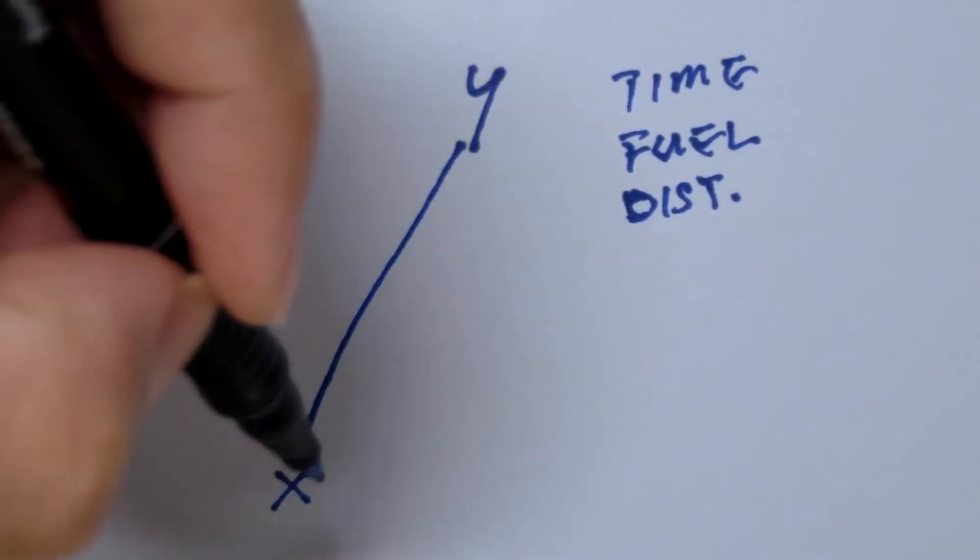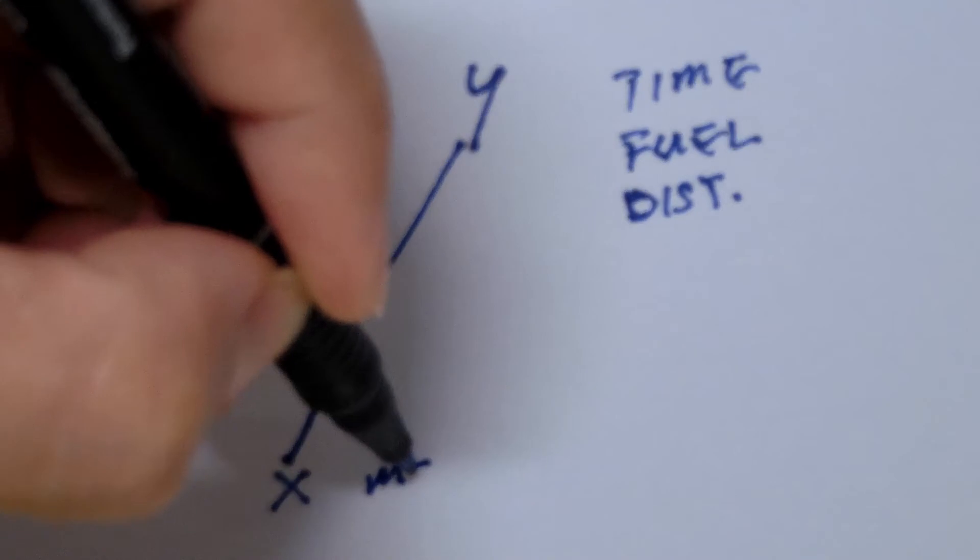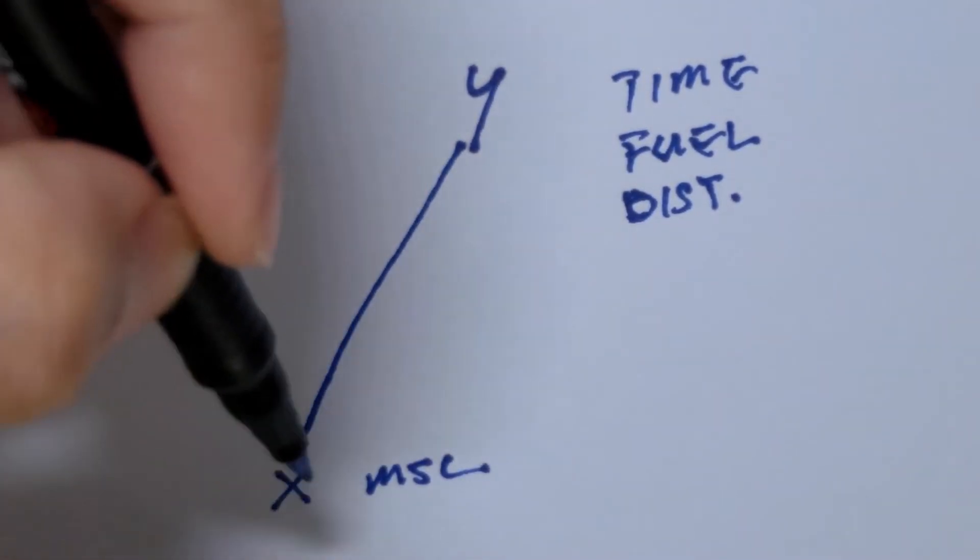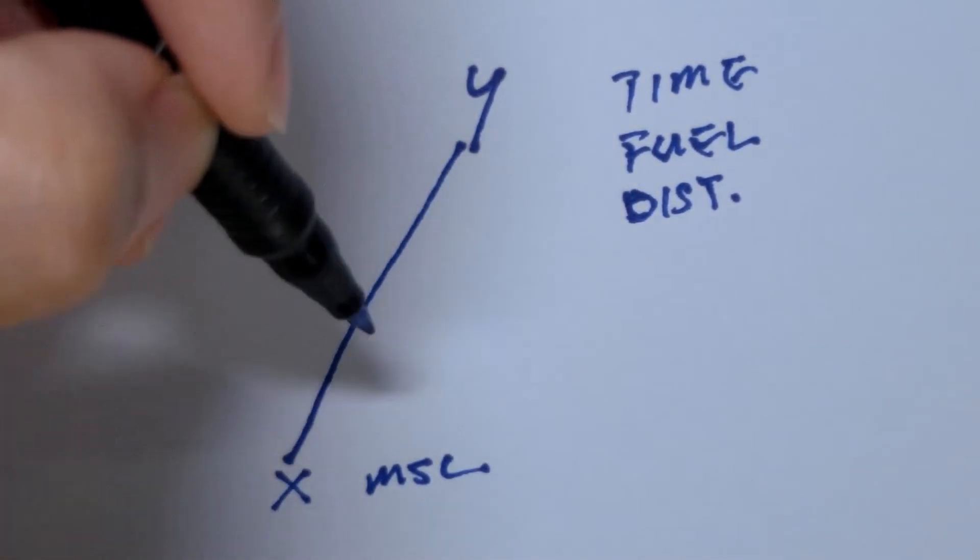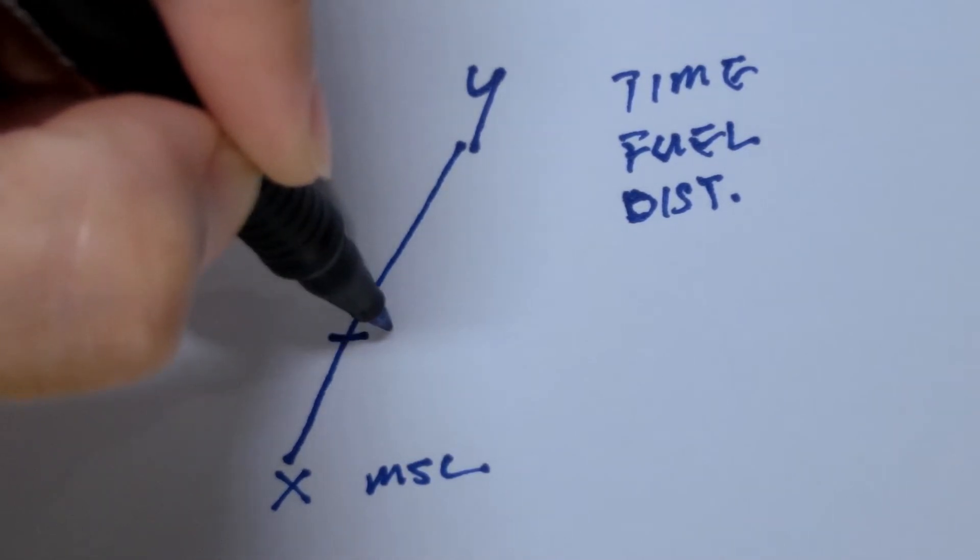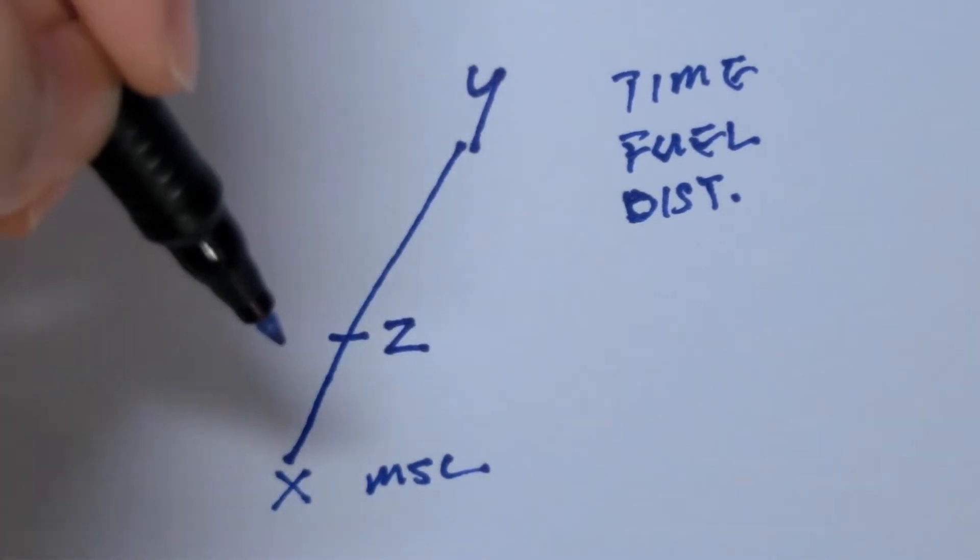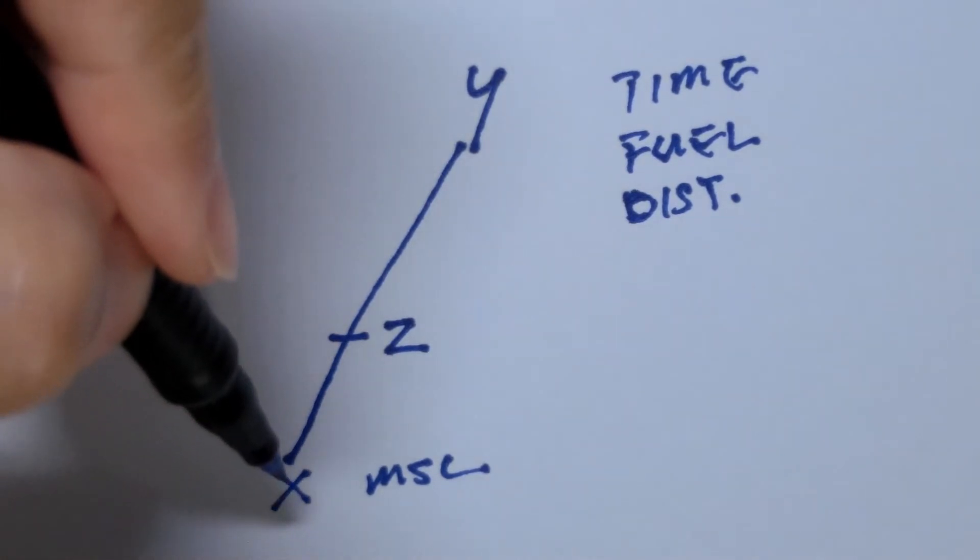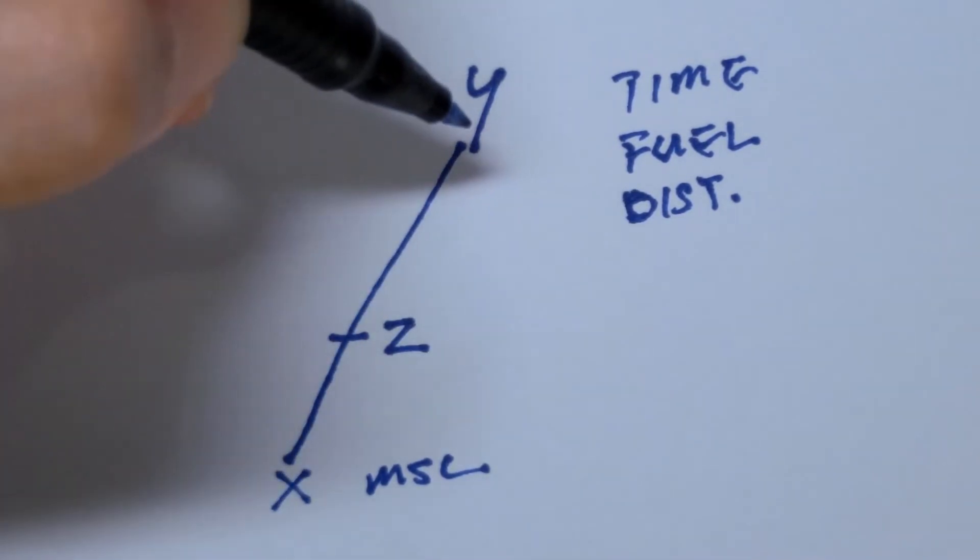Now, if X was mean sea level, making that assumption, and we decided to have an intermediate point here, which we will call Z, an aircraft that takes off from mean sea level and climbs to Y...